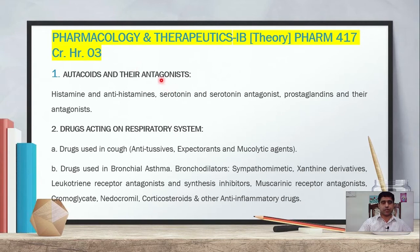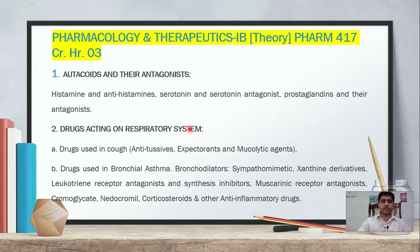The first chapter covers autacoids and their antagonists, including histamine and antihistaminic drugs, serotonin and serotonergic drugs, and prostaglandins and their antagonists. The second chapter covers drugs acting on the respiratory system, including asthma and other diseases related to the lungs. Drugs used in cough — antitussives, expectorants, and mucolytic agents — will also be studied.